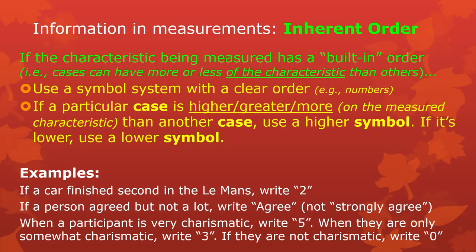If a participant is very charismatic, maybe they have a scale that goes from 0 to 5, and they get a 5. When they're only a little charismatic, maybe write a 3, and if they're not charismatic, write a 0. It's important that you have very clear, structured rules — you can't just go by the seat of your pants.